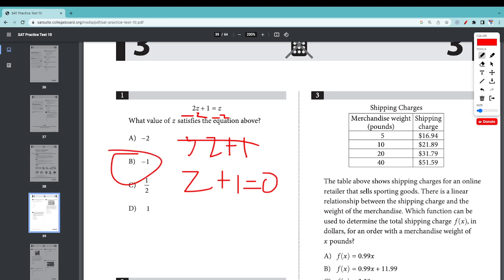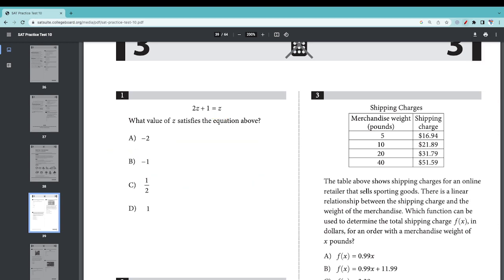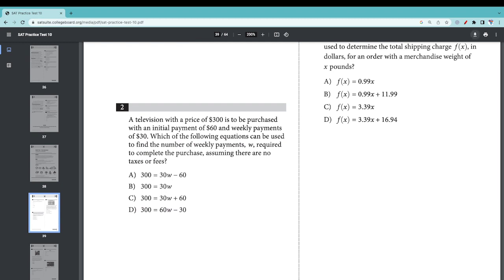Number 2: A television with a price that starts with 300 dollars is to be purchased with an initial payment of 60 and weekly payments of 30. Which of the following equations can be used to find the number of weekly payments w that are required to complete the purchase?